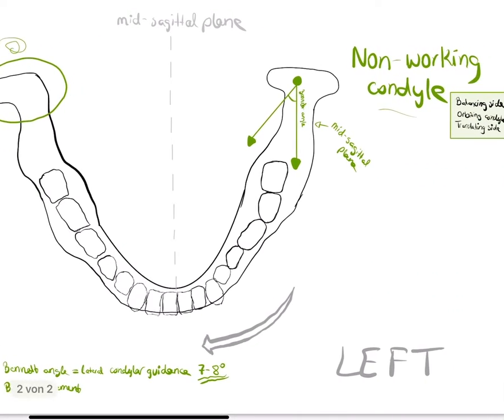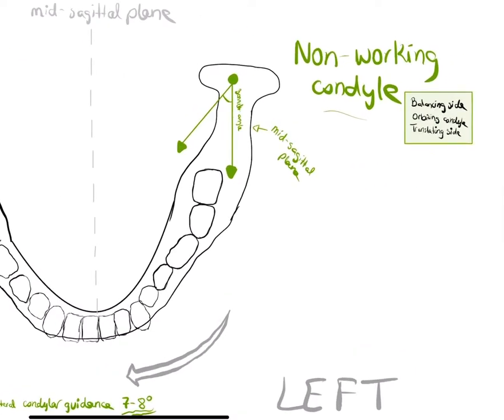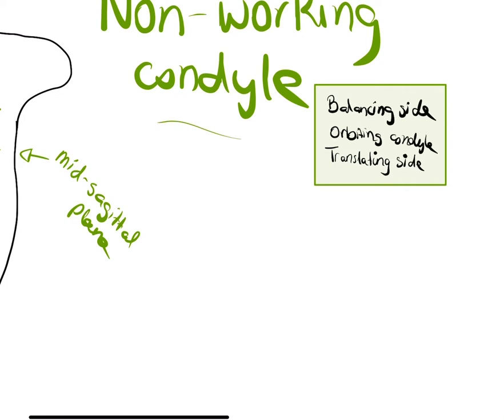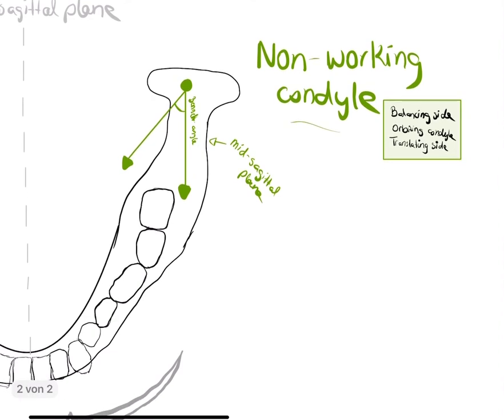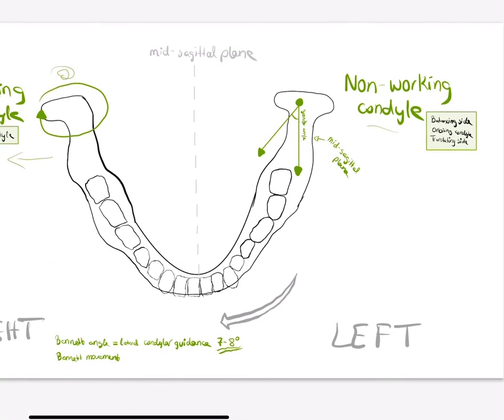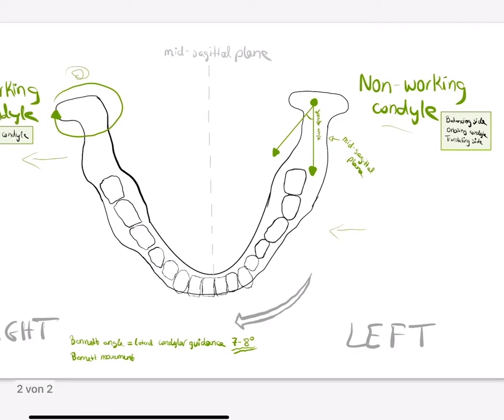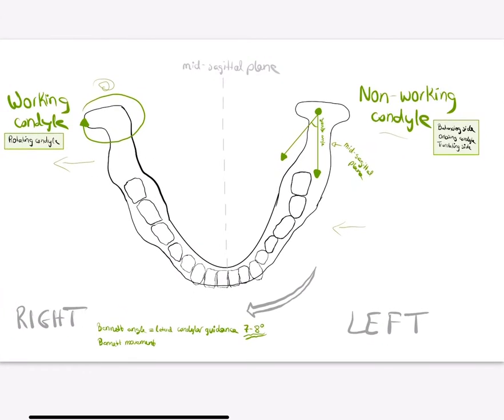The non-working condyle is also called the balancing side, or the orbiting condyle, or the translating side. The mandible moves medially, from the left side to the right side from the patient position. It can also go from the right to the left side.